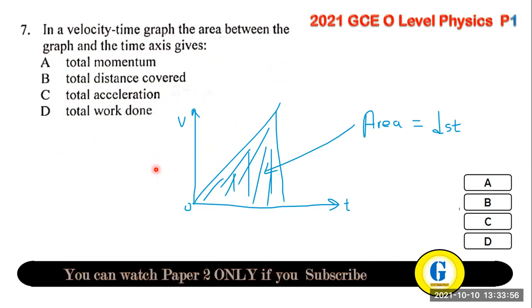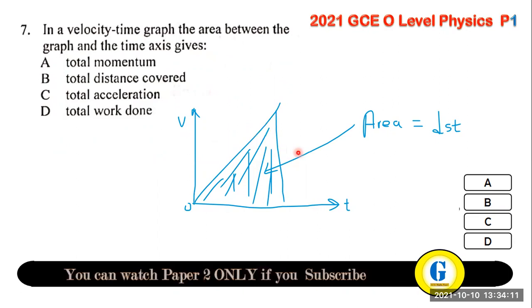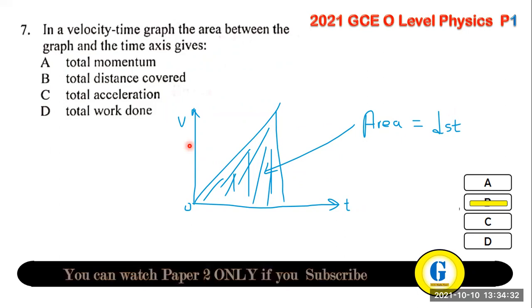Question 7: in a velocity-time graph, the area between the graph and the time axis gives the distance. The area under the graph — calculated as ½ × base × height — gives velocity × time, which equals displacement or distance. The answer is distance.